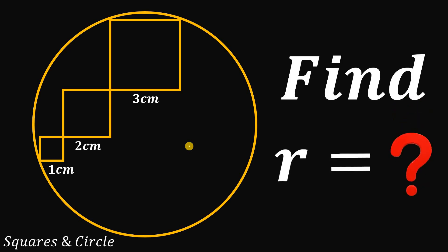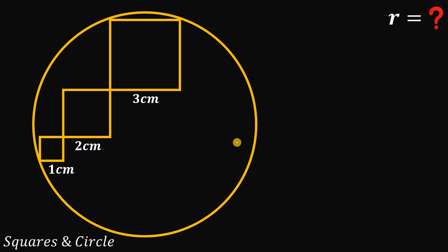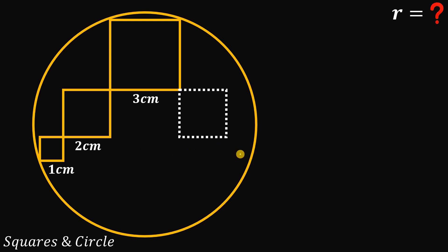Now let's see if you got the correct answer. Our goal in this question is to find out the length of the radius r. To answer this question, we will use the symmetry of this figure. We're going to draw another two-by-two square on this side and another one-by-one square on the other side.